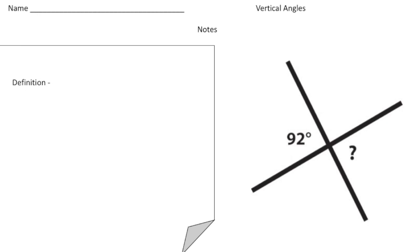So what exactly are vertical angles? Right here is a good example. This is 92 degrees and the angle opposite. So vertical angles are opposite angles. So let's write this down. Opposite angles formed by two intersecting lines.